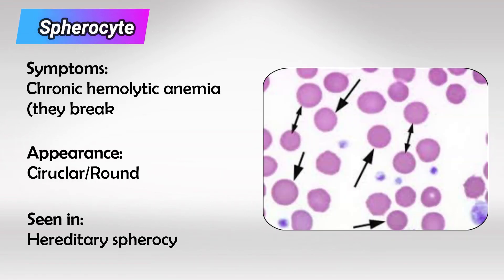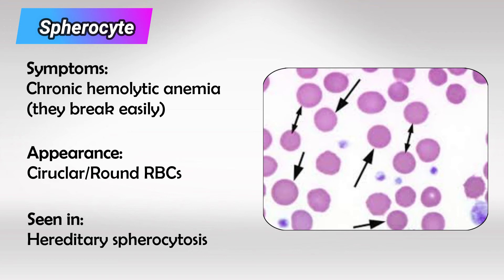Next we have spherocytes, and these are commonly seen in hereditary spherocytosis. They cause chronic hemolytic anemia. These can also be normal findings in blood samples that are left in the air for long periods of time.